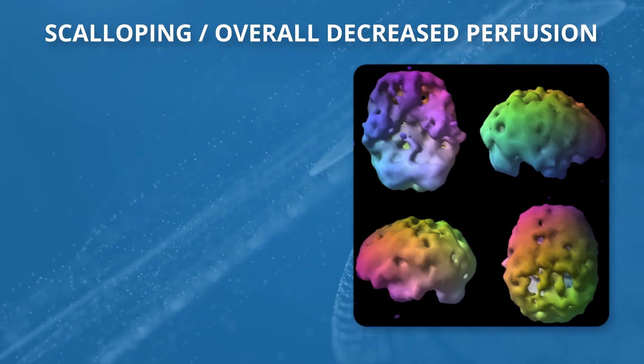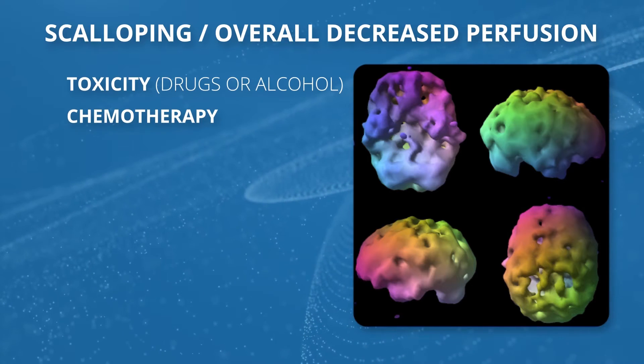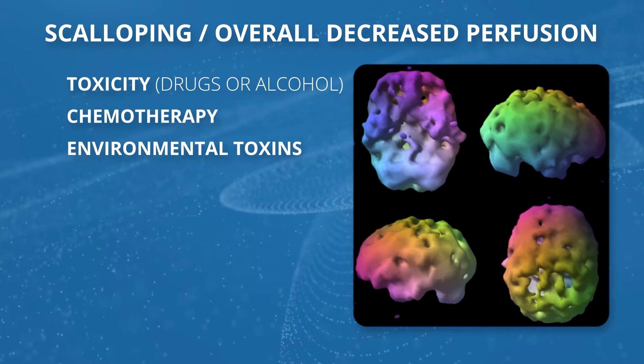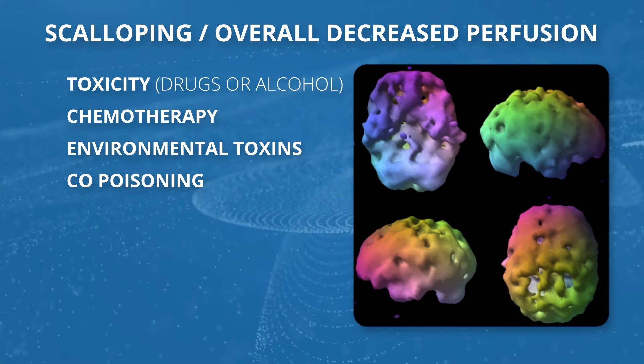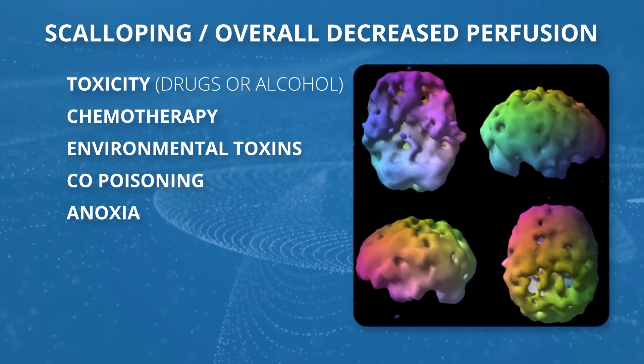The first thing I learned from SPECT is drugs and alcohol are bad for your brain. They give this pattern we call scalloping, or overall decreased perfusion. But then I learned there are people who weren't doing drugs and weren't alcoholics that had this pattern. Over the years, I've realized drugs and alcohol can give us this pattern, but also chemotherapy in some patients, environmental toxins like mold, carbon monoxide poisoning — so we see this pattern a lot in our firefighters — and anoxia, any lack of oxygen.